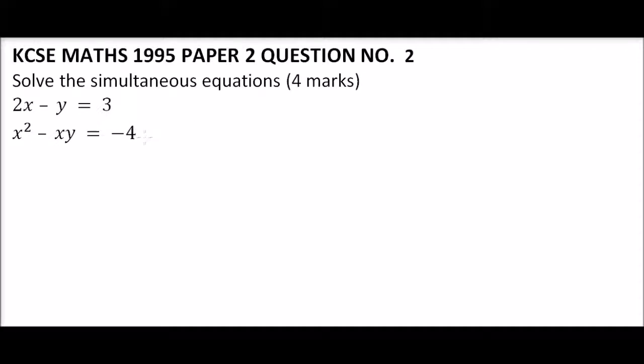This is a 1995 Paper 2 Question Number 2 KCSE Maths. We are told to solve these simultaneous equations. The first one is 2x minus y equals 3, then we have x squared minus xy equals minus 4.